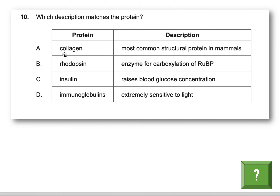Collagen is a protein, and it's the most common structural protein in animals — that's actually true, so the answer will be A. It's a protein that helps strengthen things. It's in your skin — when you pull your skin it doesn't rip apart because there's a lot of collagen keeping it strong. There's also collagen in your ligaments, tendons, and muscles — all things related to structure.